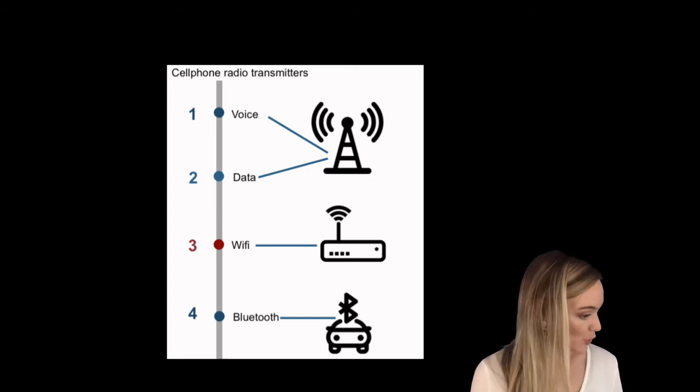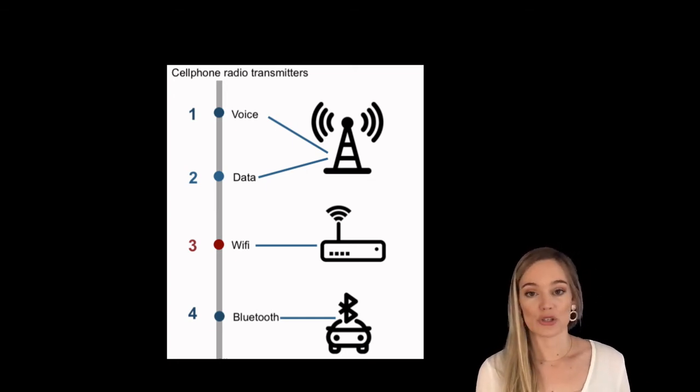You then also have your wifi so as soon as your cell phone is connected to wifi it's also communicating to another device and emitting electromagnetic energy. And then lastly we have bluetooth.